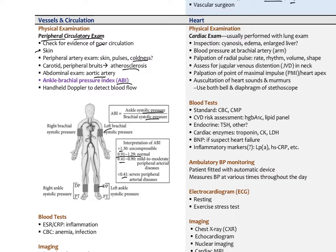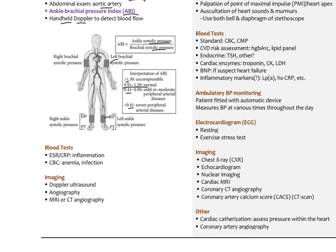Increasingly, there are handheld Dopplers that some physicians carry in their offices — ultrasound machines to check for blood flow through a blood vessel. Different laboratory tests are used for vascular diseases: ESR or CRP for systemic inflammation, a CBC to check for anemia or infections. Different imaging techniques for vascular diseases include Doppler ultrasound, angiography with contrast agent, and MRI or CT.